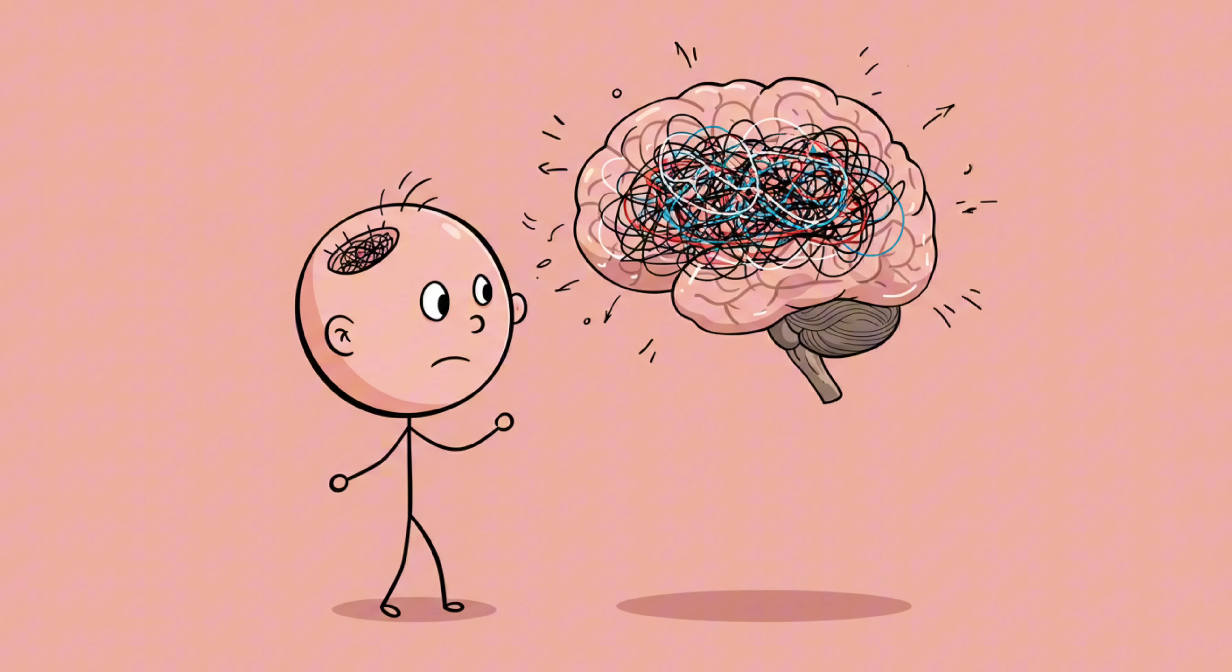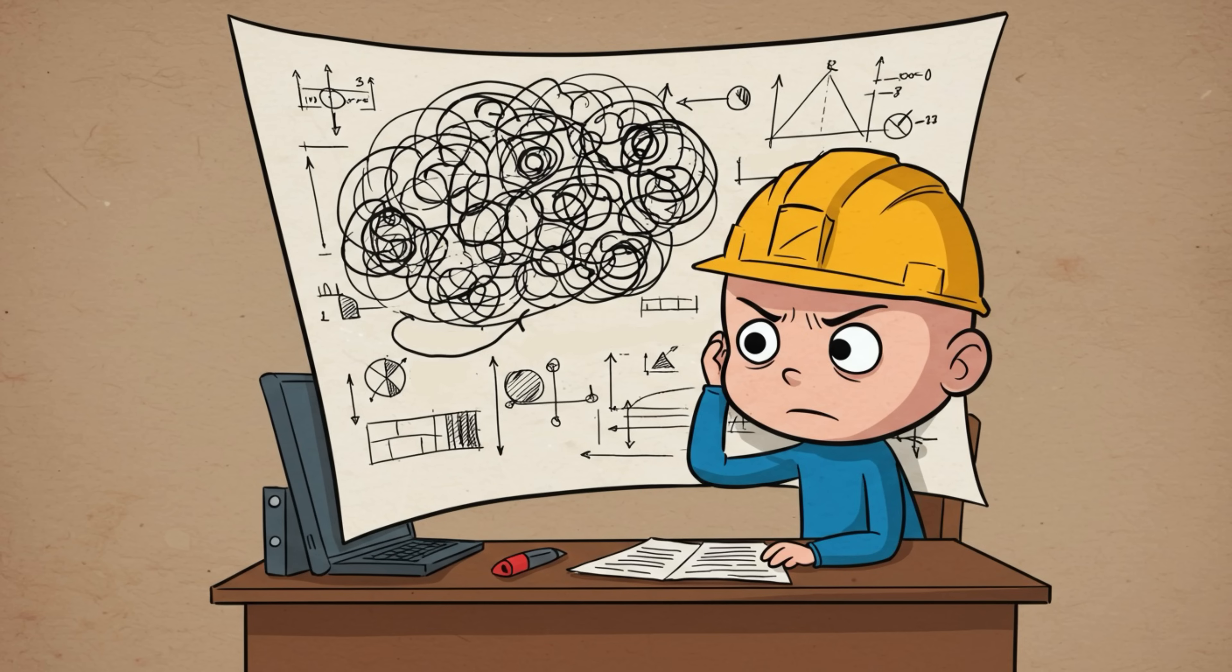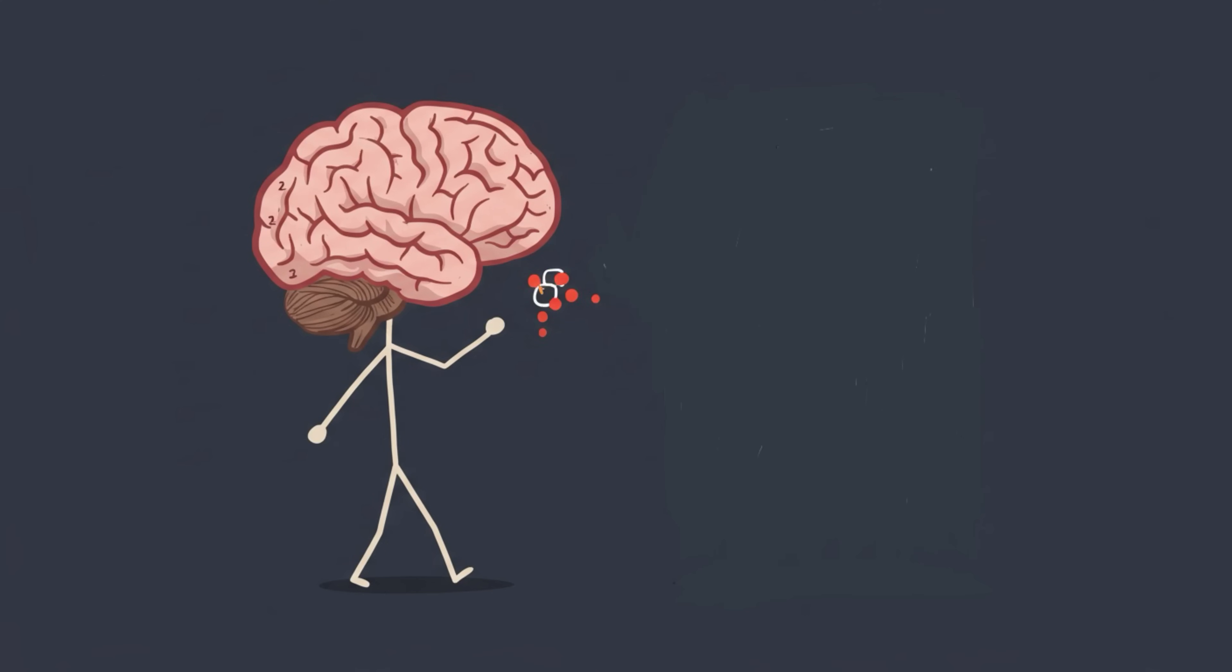And because this constant rewiring changes how your brain processes information, even if something was stored, it could be overwritten or scrambled later. Think of it as repeatedly installing updates on your phone until the original files just vanish. Basically, BabyU was running the most chaotic renovation project of all time, and archiving memories was somewhere around priority number 73.